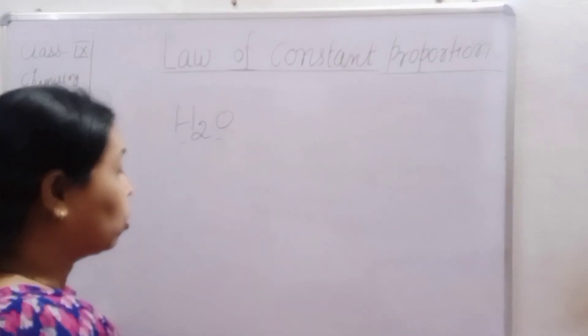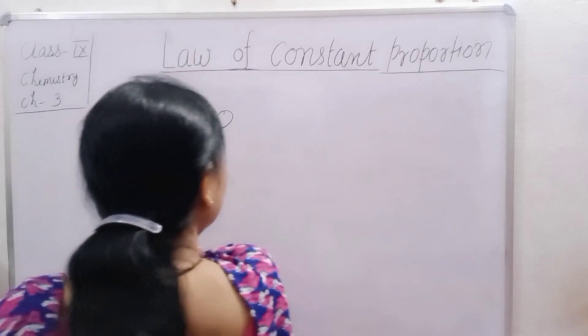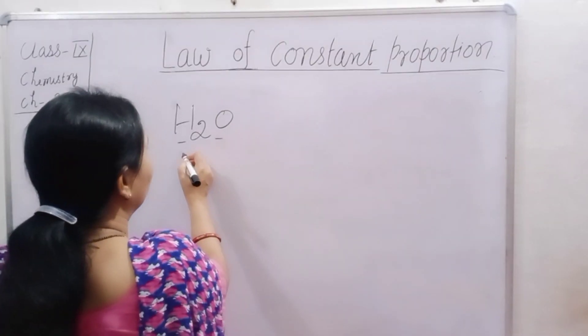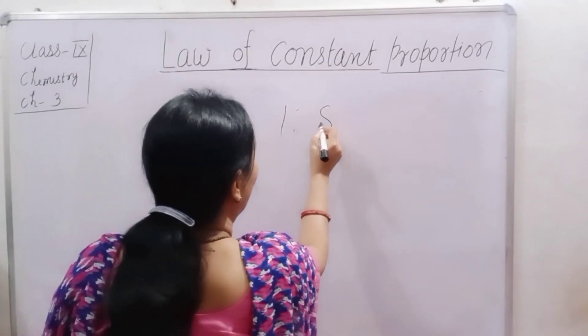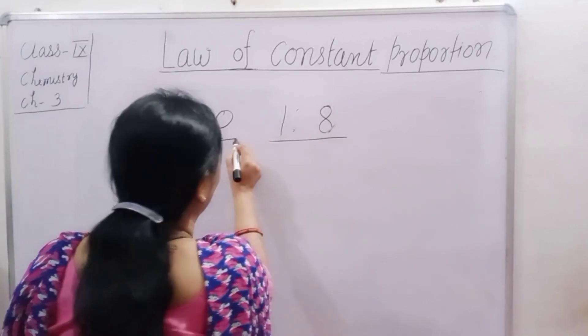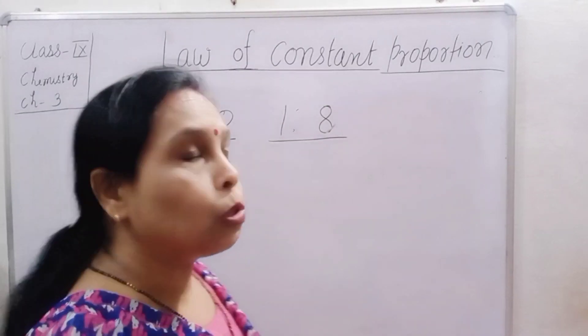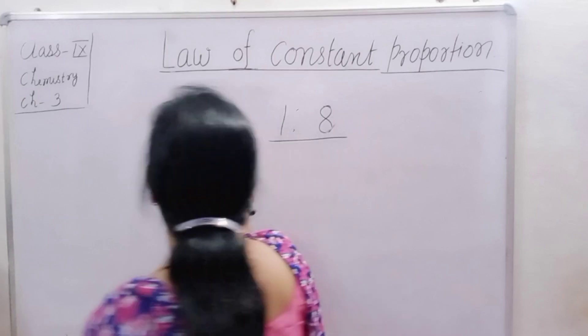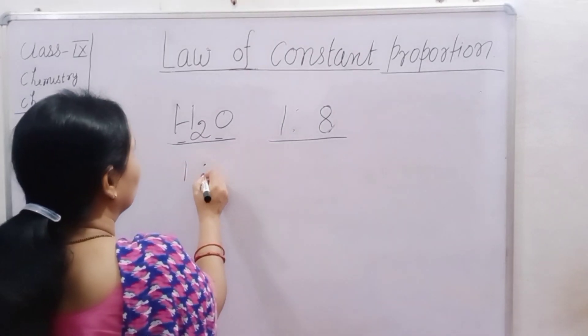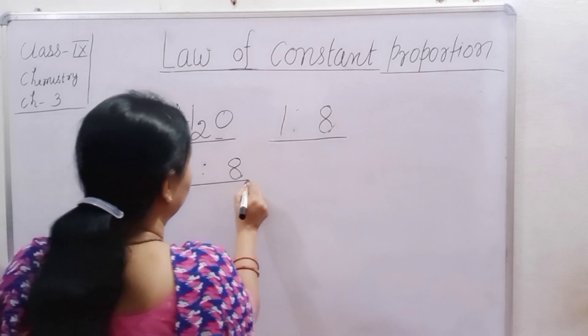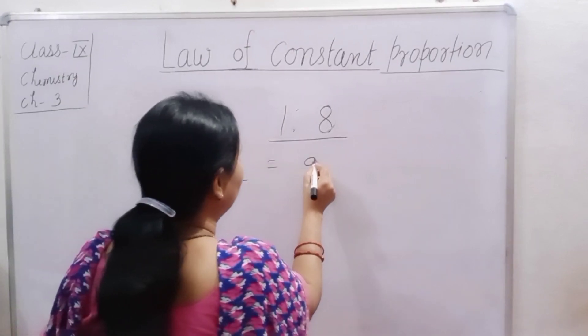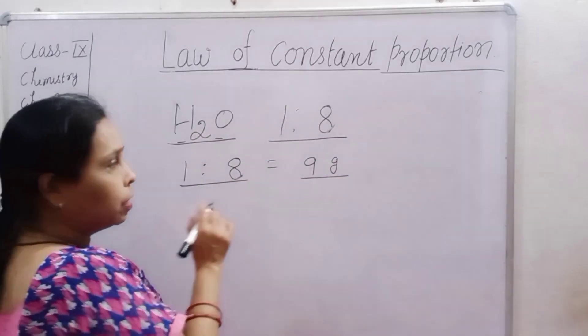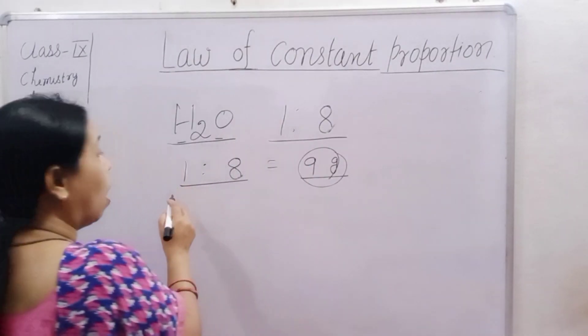And hydrogen and oxygen always combine in a definite proportion. Definite proportion is one is to eight. One or eight ke hi proportion mein hydrogen or oxygen. One is to eight mass ke hi according in this proportion mein combine karna hai. Hydrogen one, oxygen eight. Then nine gram water is formed. Water ho gya nine gram.